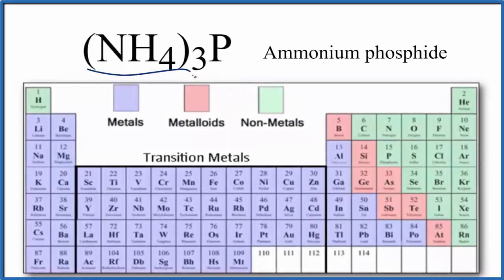The question is whether NH4 3P ammonium phosphide is ionic or covalent. It's a little bit of a tricky one, so let's take a look at this.